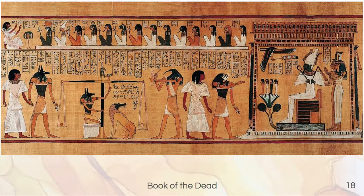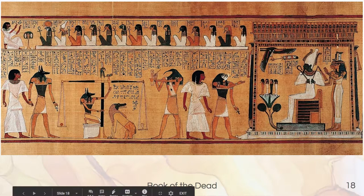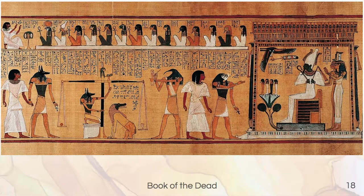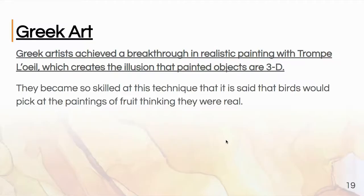Here is the Book of the Dead, which shows that same stylized twisted body formation. This is done on papyrus — a very ancient sort of painting material that people would paint on.